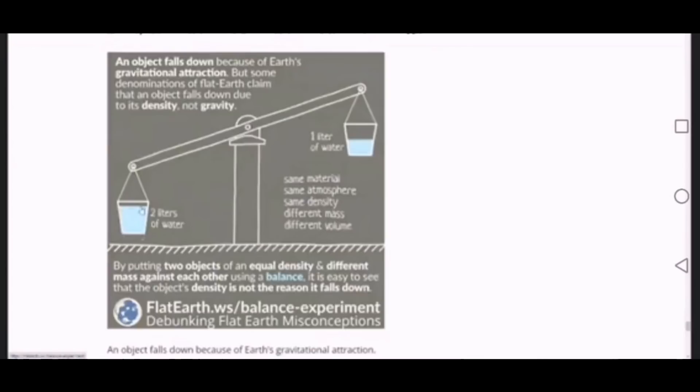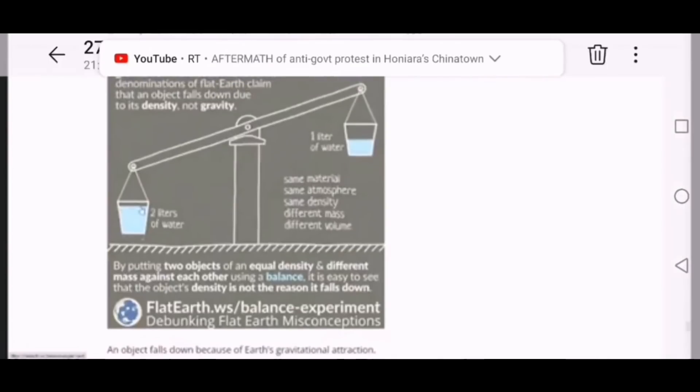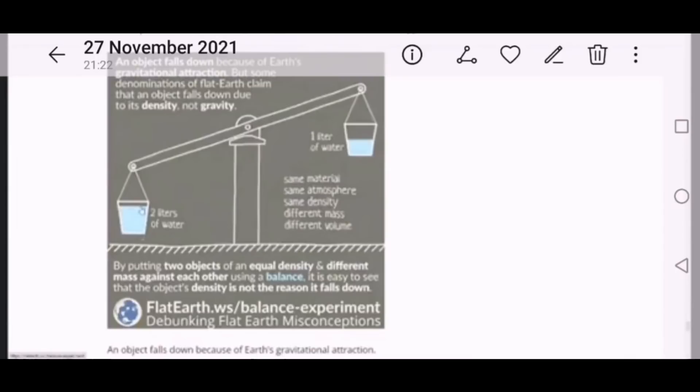So then they've got a balance scale. Two litres of water on one side, one litre of water on the other side. Same material, same atmosphere, same density, different mass, different volume. Yes, correct. By putting two objects of equal density and different mass against each other using a balance, it is easy to see that the object's density is not the reason it falls down. Right. But then you've changed the volume. So if you keep the density the same and you change the volume, then you're not measuring density difference, are you? You're measuring mass difference.